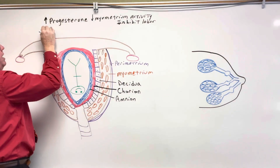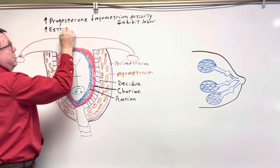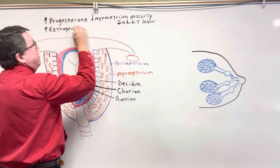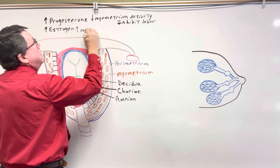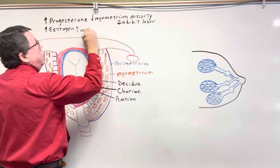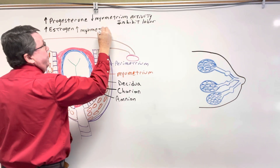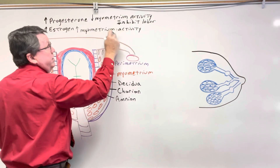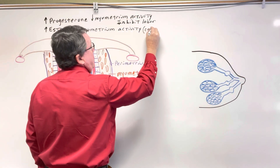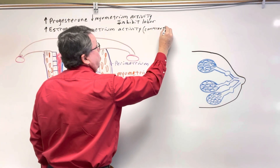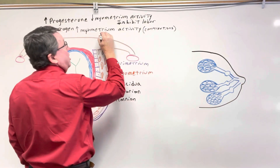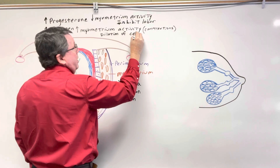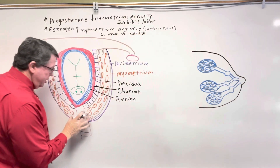We also get an increase in estrogen, and estrogen is going to do the exact opposite — it's going to increase myometrium activity, or contractions. It's also going to cause dilation of the cervix. The cervix is down here, and when a baby is going to be born, they're going to pass out through the cervix and then through the vagina.